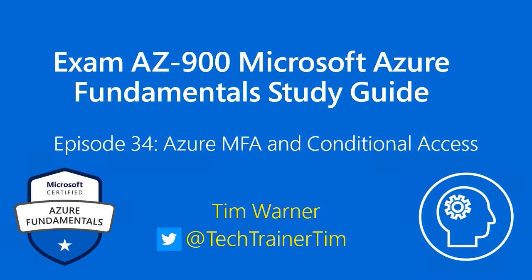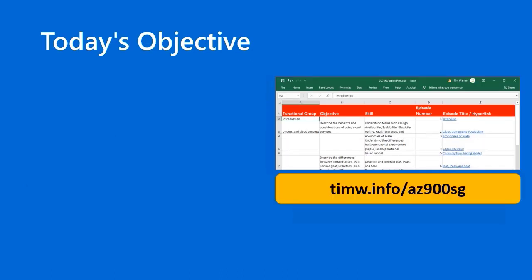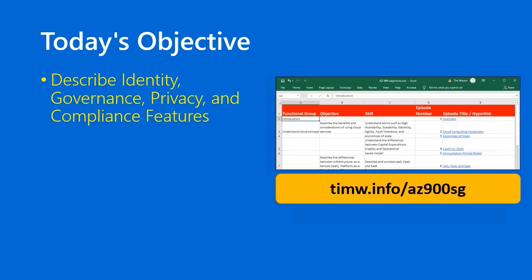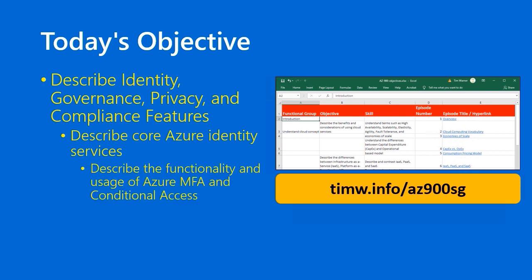Hello there, and welcome to Exam AZ-900, Microsoft Azure Fundamental Study Guide. This is episode 34, entitled Azure MFA and Conditional Access. My name is Tim Werner. Today's objective in the AZ-Microsoft Azure Fundamentals objective domain starts with the functional group Describe Identity, Governance, Privacy, and Compliance features, drills into Describe Core Azure Identity Services, and specifically today's skill is Describe the functionality and usage of Azure MFA and Conditional Access. You can download or view the table of contents online at timw.info/AZ-900-SG.